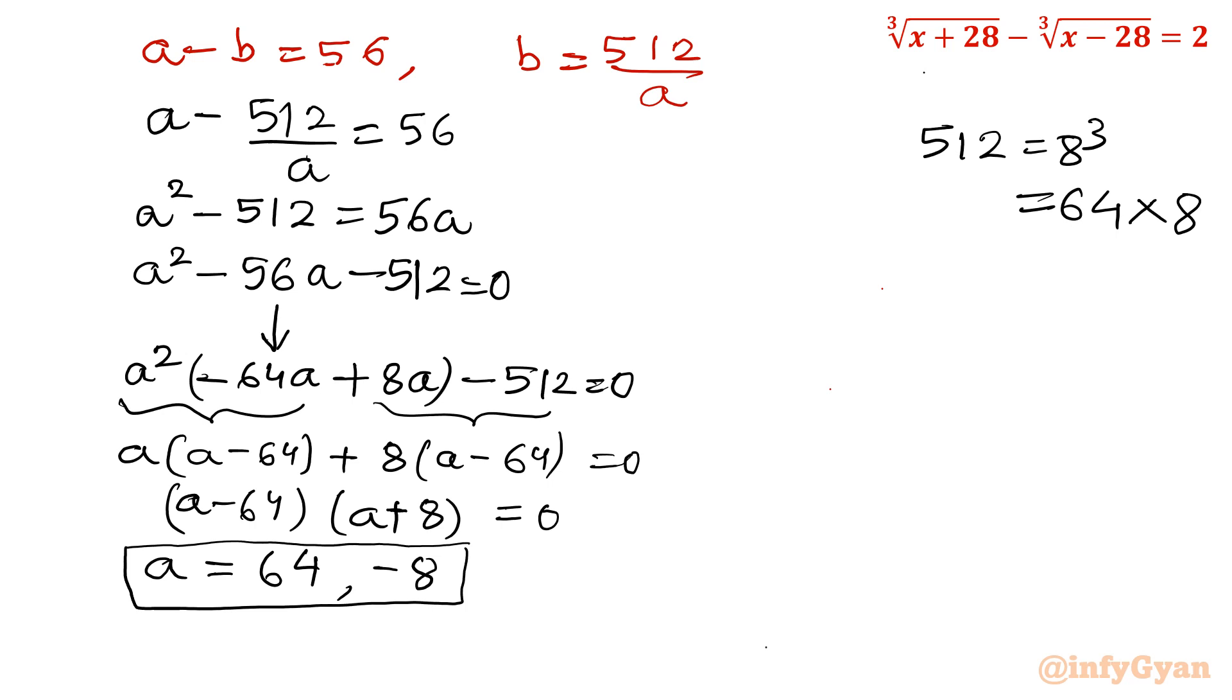Now remember what was our substitution. This was our a, this was our b. So let us consider only a. So here I will consider two cases separately. First one is for a equal to 64. And then we will see for a equal to minus 8 what will happen, what value of x will come out.